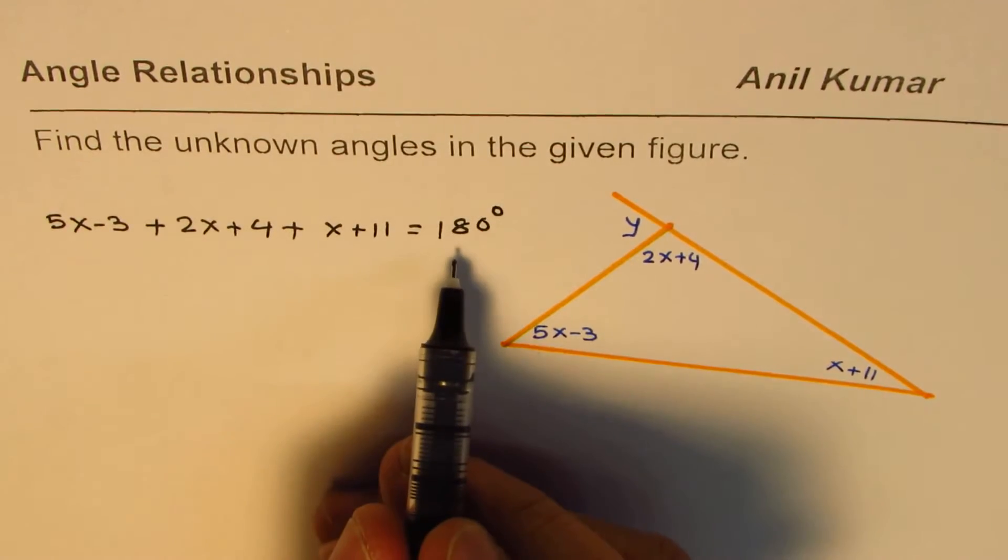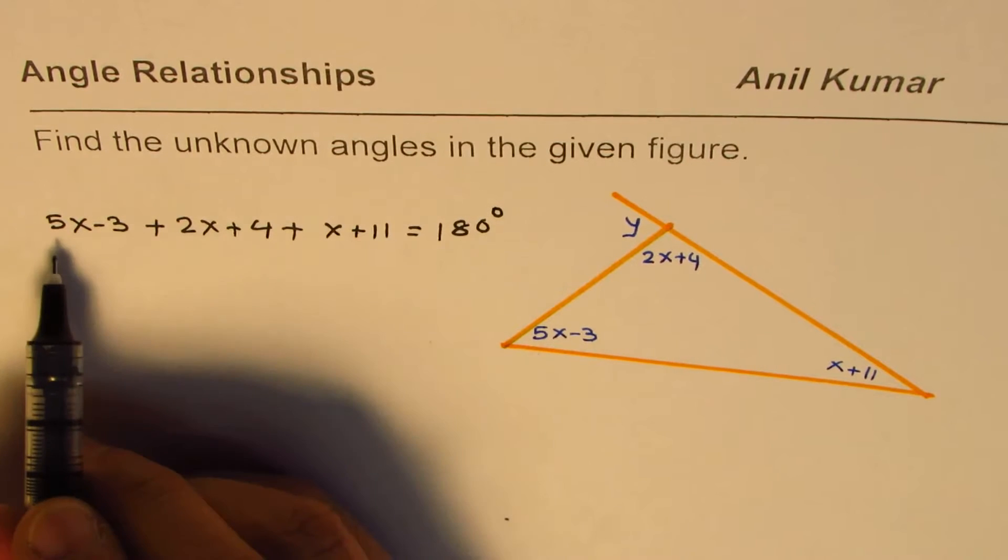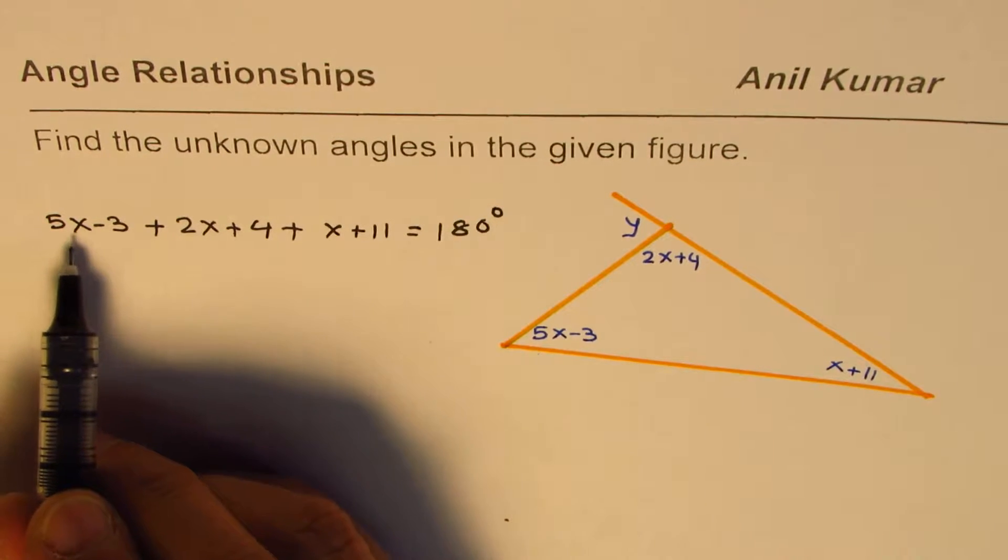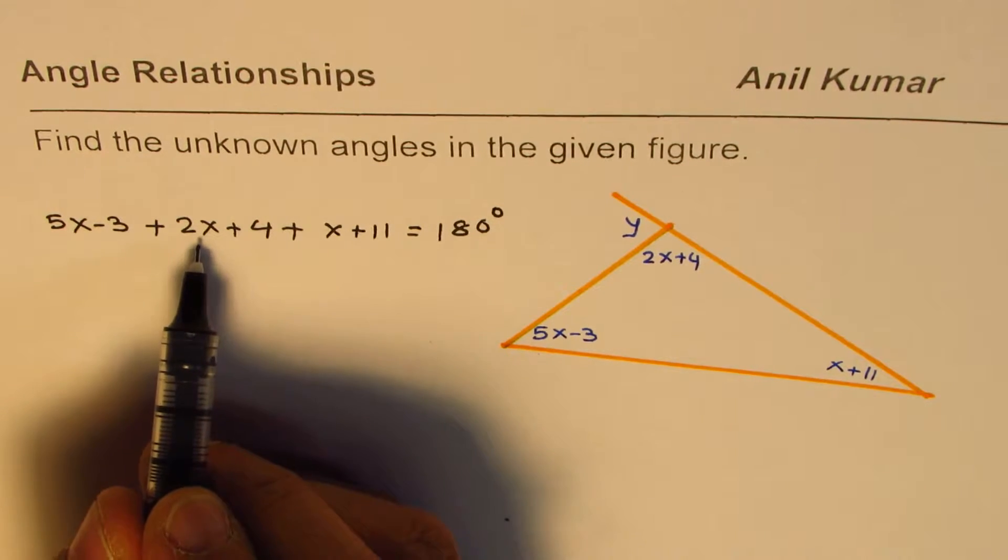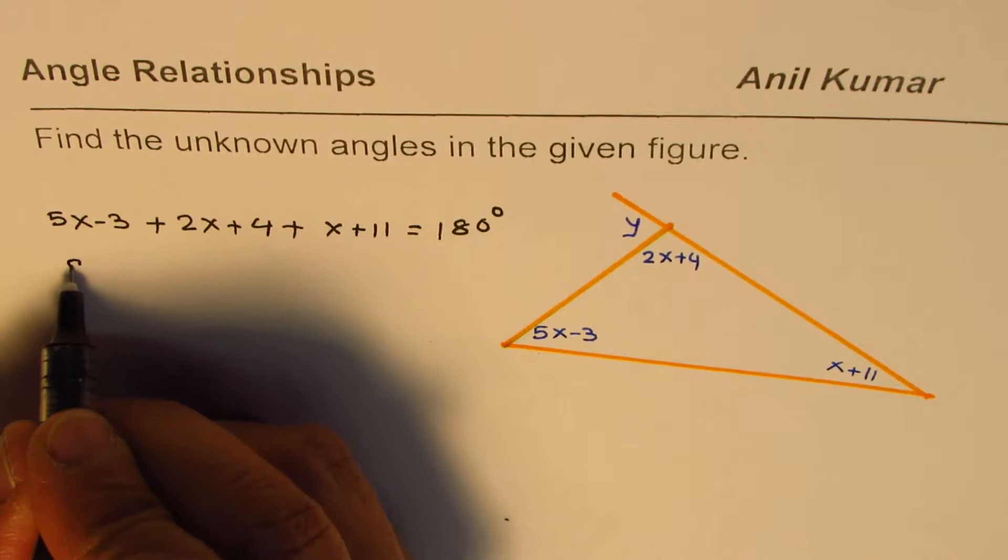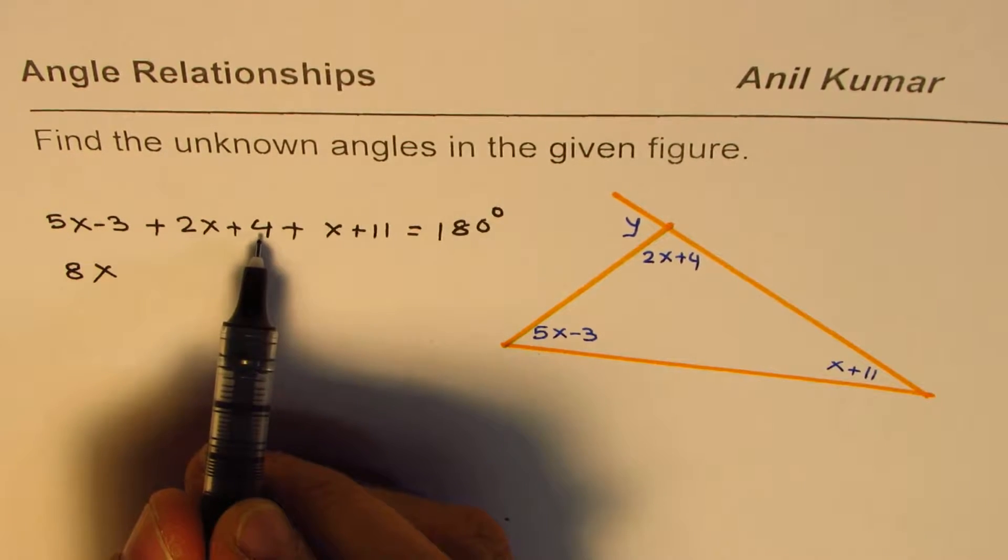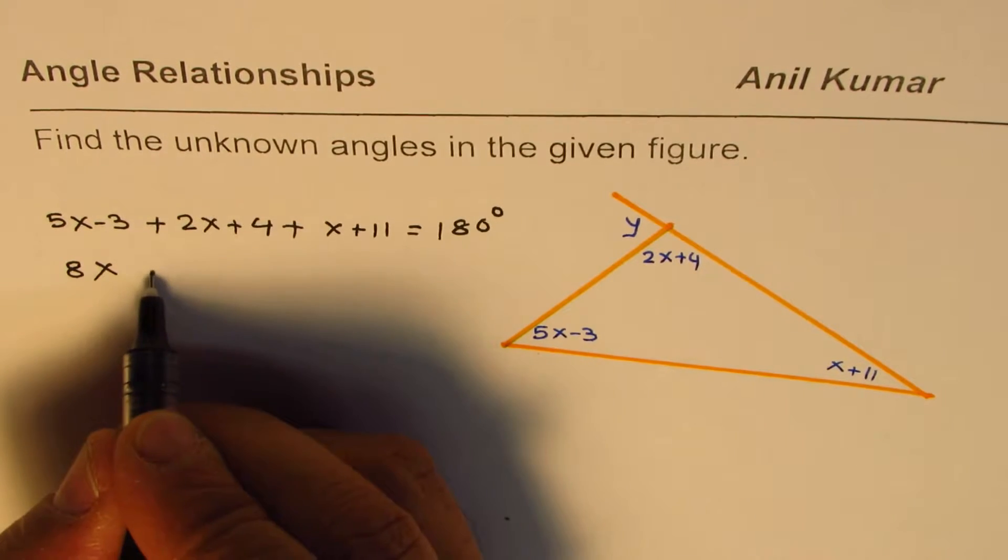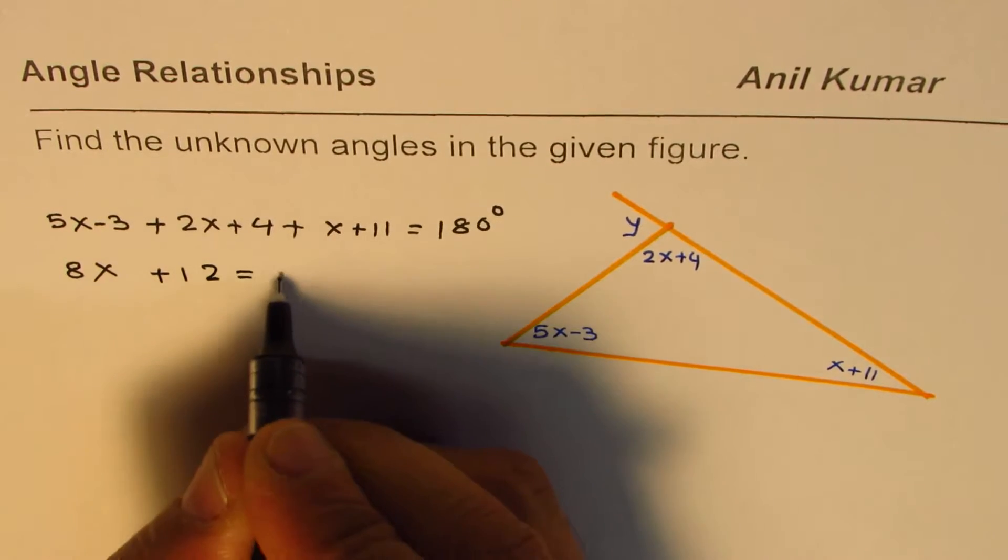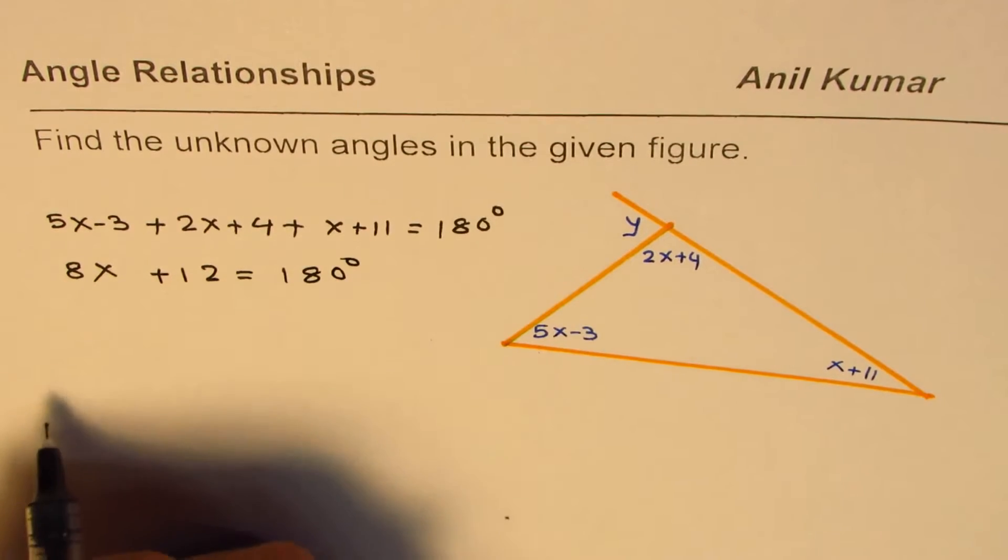Now this is a linear equation with one variable. We can solve for it: 5x plus 2x is 7, 7 plus 1x is 8x, so we have 8x. Minus 3 plus 4 is plus 1, plus 1 plus 11 is plus 12, equals to 180 degrees.